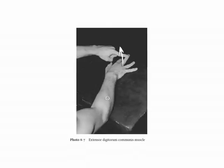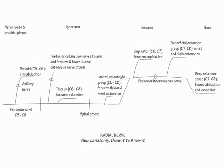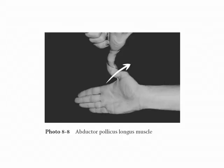To demonstrate extensor digitorum communis, extend the third and fourth digits at their metacarpophalangeal joints. Next, label the posterior interosseous innervation to the deep extensor group, comprising the radially innervated thumb muscles: abductor pollicis longus, extensor pollicis longus, and extensor pollicis brevis. Demonstrate that abductor pollicis longus abducts the thumb in the plane of the palm. Remember the triad: up is for median, in is for ulnar, and out is for radial.